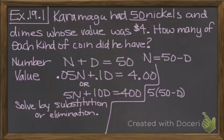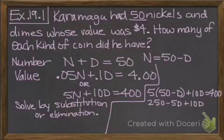We'll take that and plug it in. 5 times 50 minus d or n plus 10d equals 400. Then we'll distribute that 5. 5 times 50 is 250 and 5 times negative d is negative 5d plus 10d equals 400.